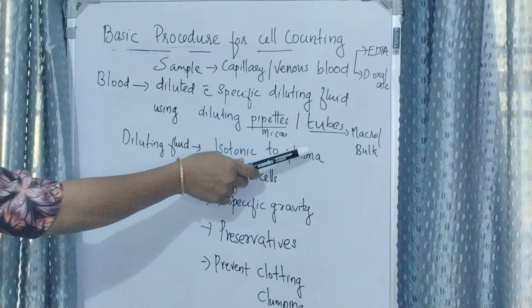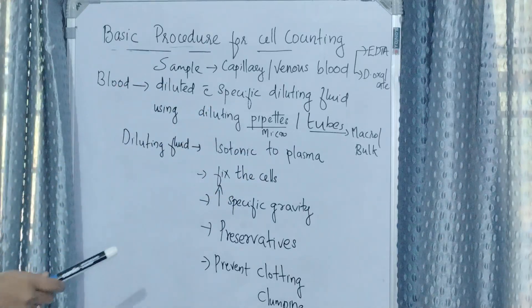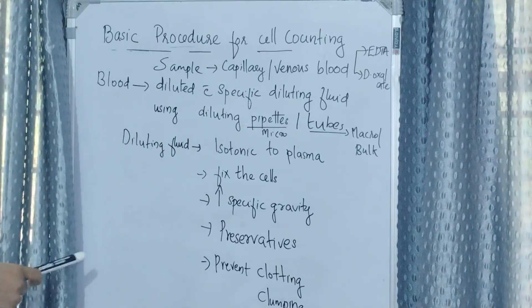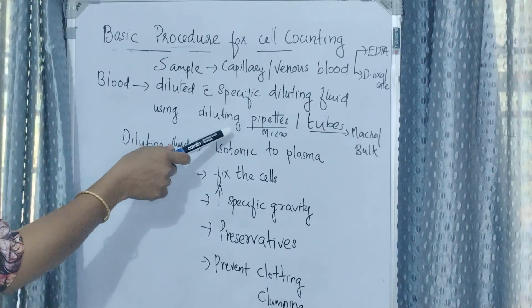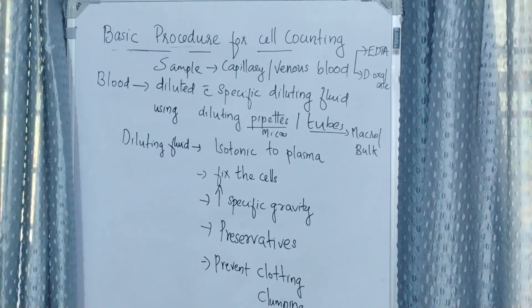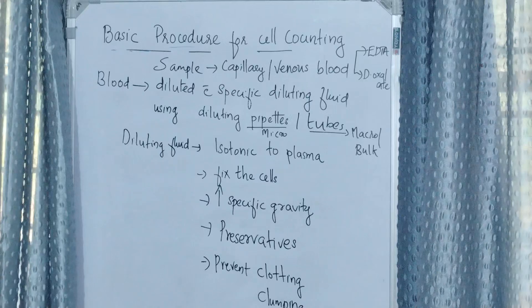Dilution can be made either by pipettes or by tubes. If using pipettes, dilution is called micro dilution, and if using tubes, it's called macro or bulk dilution where large amounts of blood and diluting fluid are used.